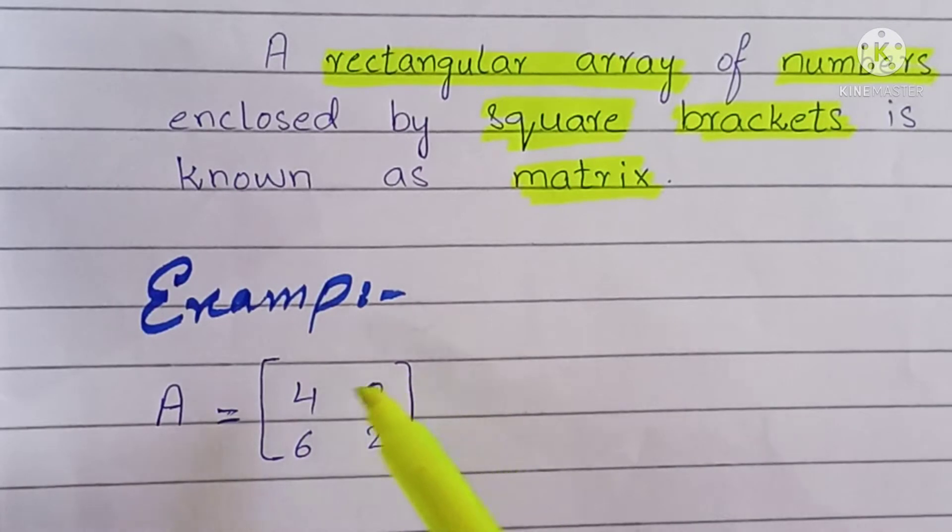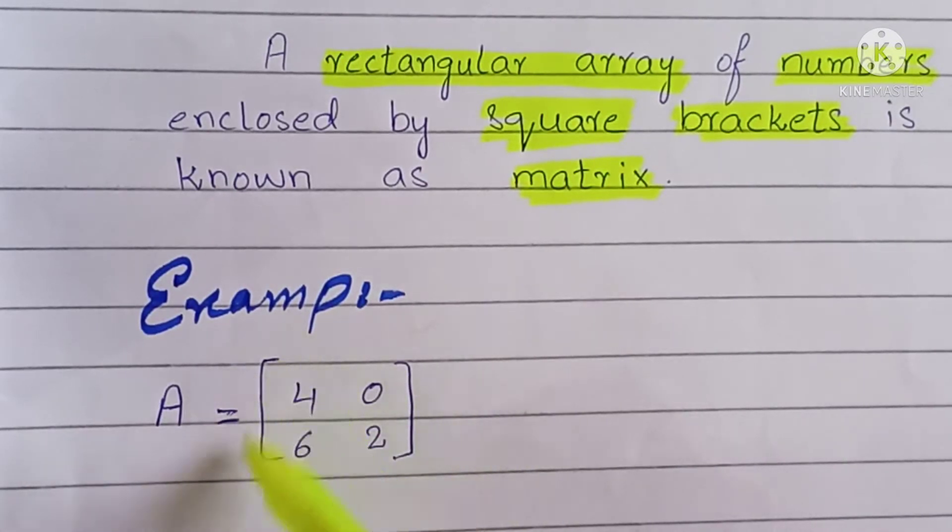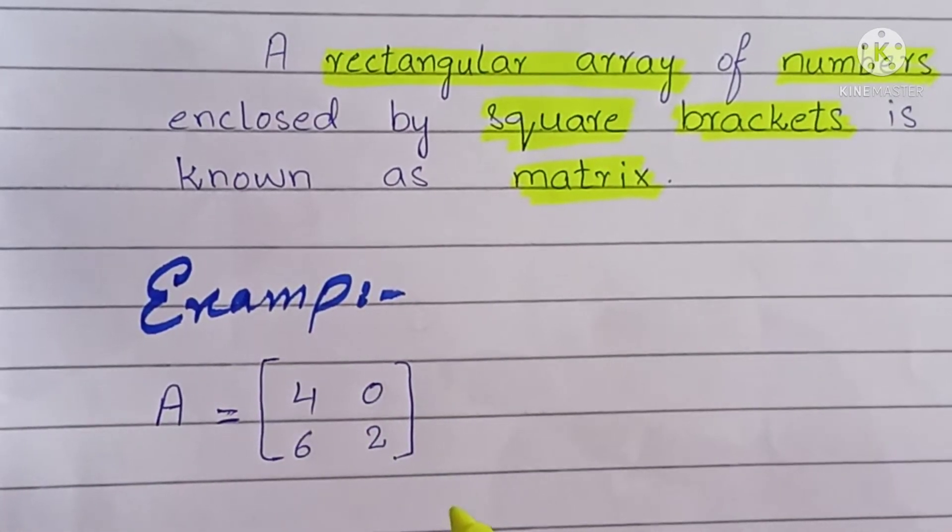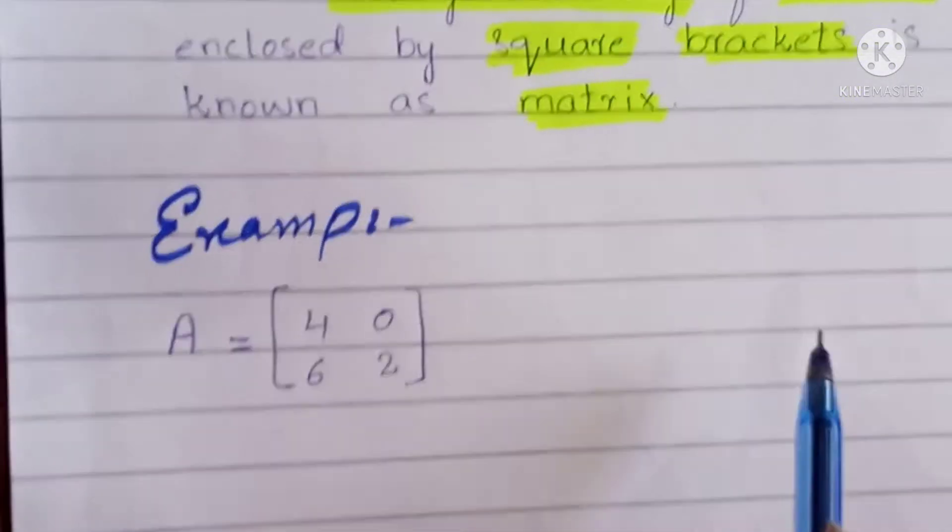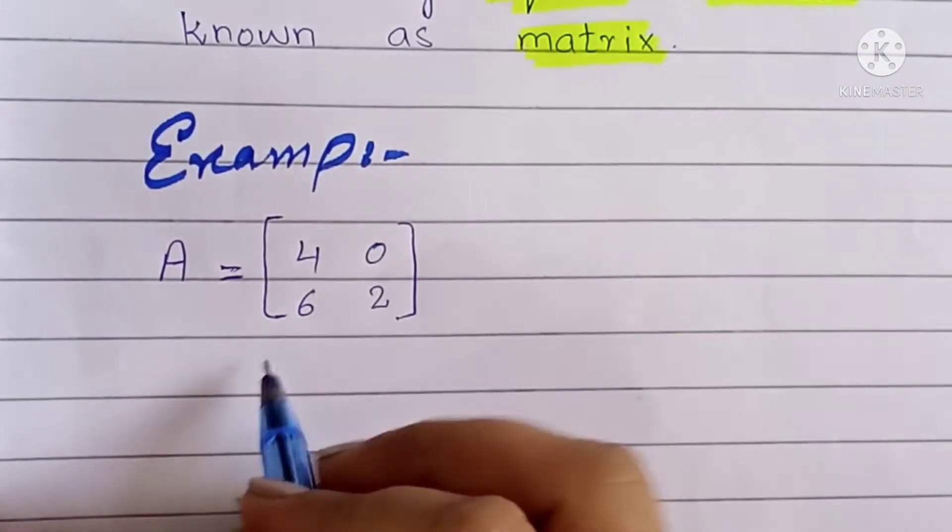These entries are divided into rows and columns. 4, 0 is the first row, 6, 2 is the second row. 4, 6 is the first column and 0, 2 is the second column.